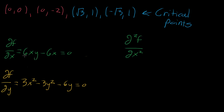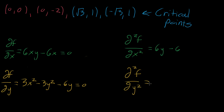The second partial derivative with respect to x twice in a row: this first term looks like six times a variable times a constant, so it'll just be six times that constant. And then the second term, the derivative of negative six x is just negative six. When we do the second partial derivative with respect to y twice in a row, the x squared term looks like a constant as far as y is concerned, so we ignore it. The derivative of negative three y squared is negative six y, and then the derivative of negative six y is just negative six.